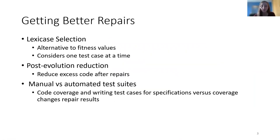A few ideas looking at getting better repairs include lexicase selection, which looks at different ways of classifying the success of a repair, post evolution reduction, which focuses on reducing excess code after a repair to reduce complexity, and looking at manual versus automated test suites, which may have impacts on overfitting.